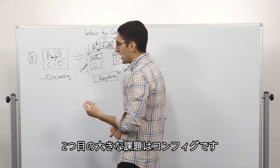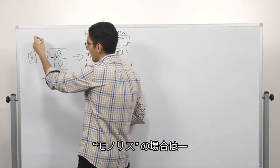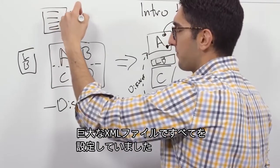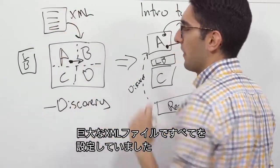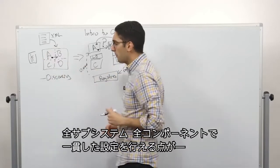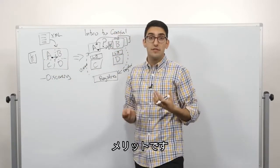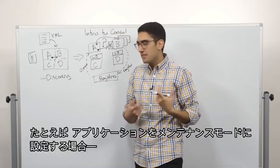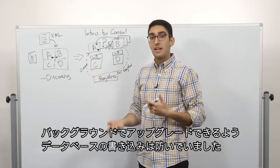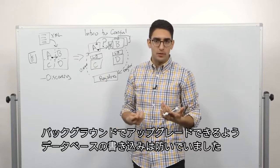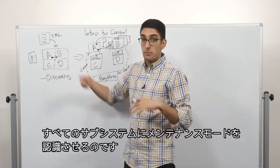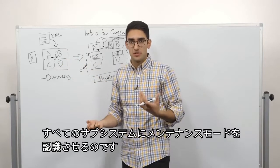So the second big challenge we run into is configuration. So when we looked at the monolith, what we probably had was the giant XML file that configured the whole thing. The advantage of this was that all of our different subsystems, all of our components, had a consistent view of the configuration. As an example, suppose we wanted to put our application in maintenance mode. We wanted to prevent it from writing to the database so that we could do some upgrades in the background. We would change this configuration file and then all of these subsystems would believe that we're in maintenance mode simultaneously.